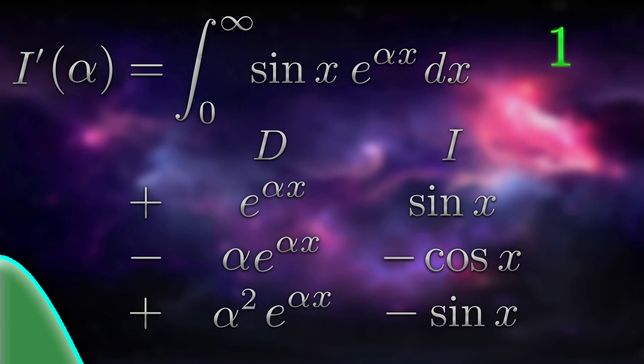The next diagonal is negative alpha e to the alpha x times negative sin x, which is alpha sin x e to the alpha x. Again, we need to see what happens as x goes to infinity and at x equals zero. As x goes to infinity, we get zero, and at x equals zero, we get zero. So this term will be zero.